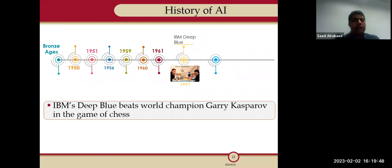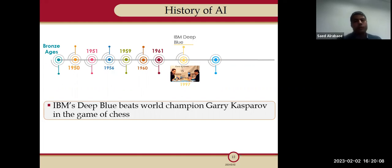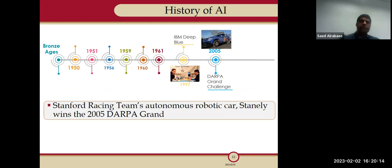Starting in 1997, IBM had Deep Blue, which beat the world chess champion Kasparov. That was really a revolution — having a game that could beat a human. It was a great achievement developed by IBM.